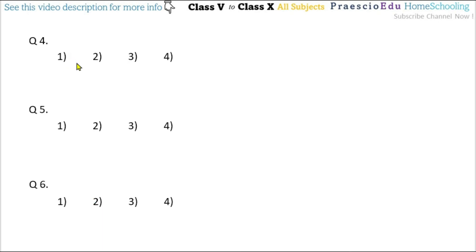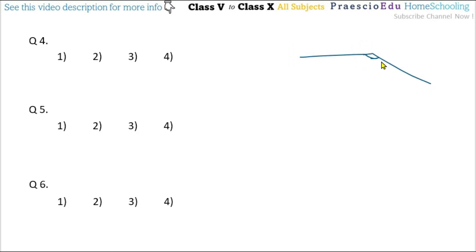Question number 4: which of the following figures is an obtuse angle? If you keenly observe, option number 3 shows a figure that is an obtuse angle — greater than 90 degrees. So the obtuse angle is given in option number 3.